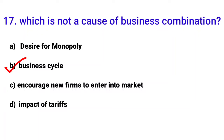Third option — increasing new firms to enter the market — this is NOT a cause of business combination; in fact, combination reduces competition. Option D — impact of tariffs — taxes do influence combinations, so that is a cause. Therefore, the answer is option C: increase of new firms entering the market.